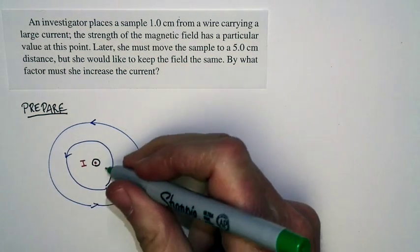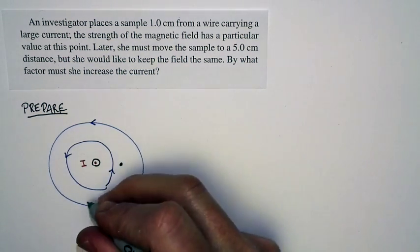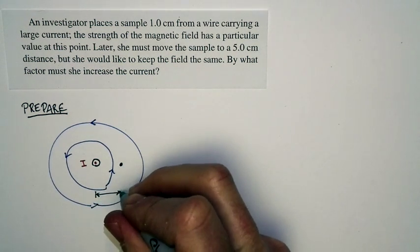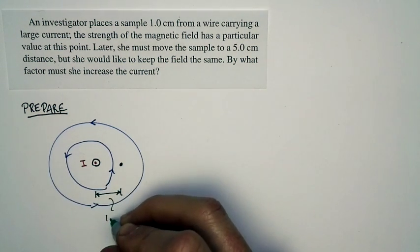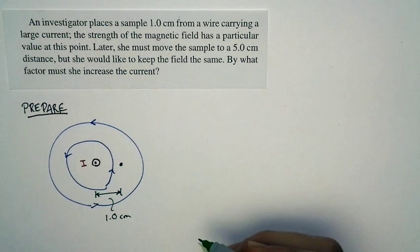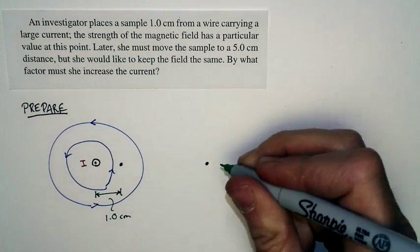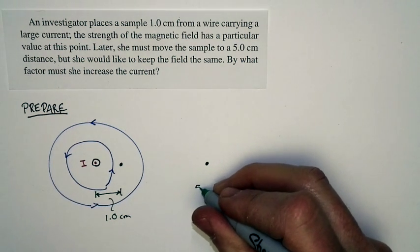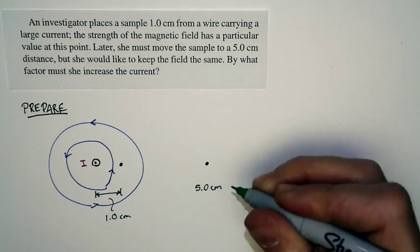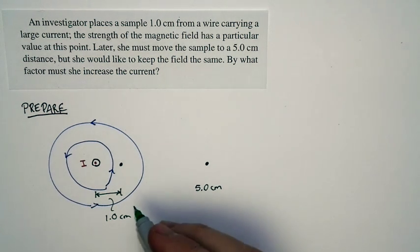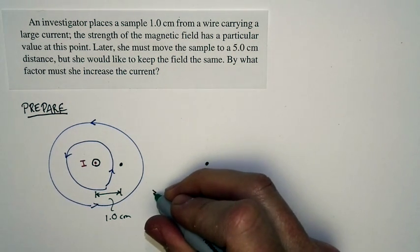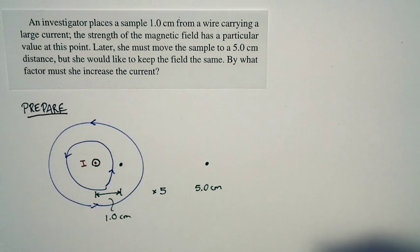And we're told at a particular point, one centimeter from the wire, the field has a certain value. Now, the investigator wants to move the sample five centimeters from the wire. So the investigator wants to put this five centimeters away. So the distance increases by a factor of five.